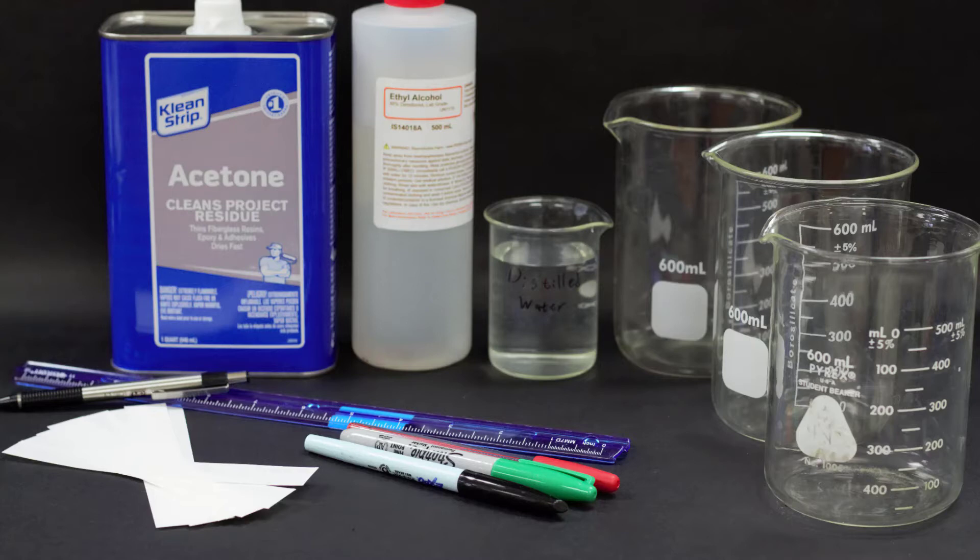You'll need nine strips of chromatography paper, three 600 milliliter beakers, several pencils, a ruler, and some masking tape.